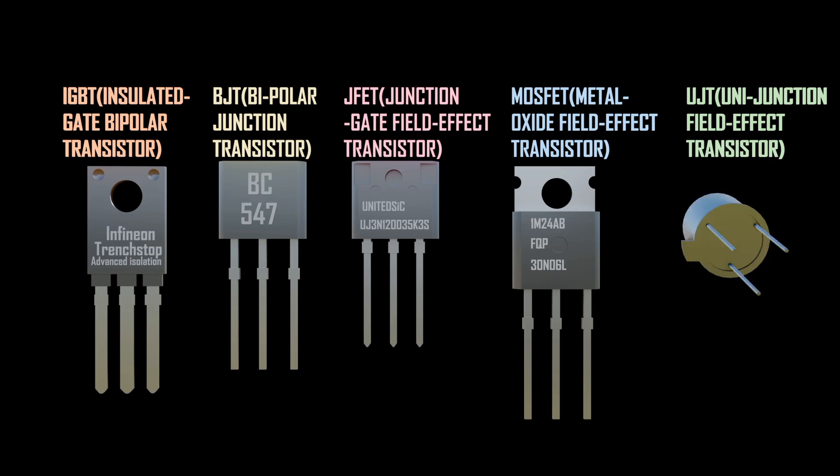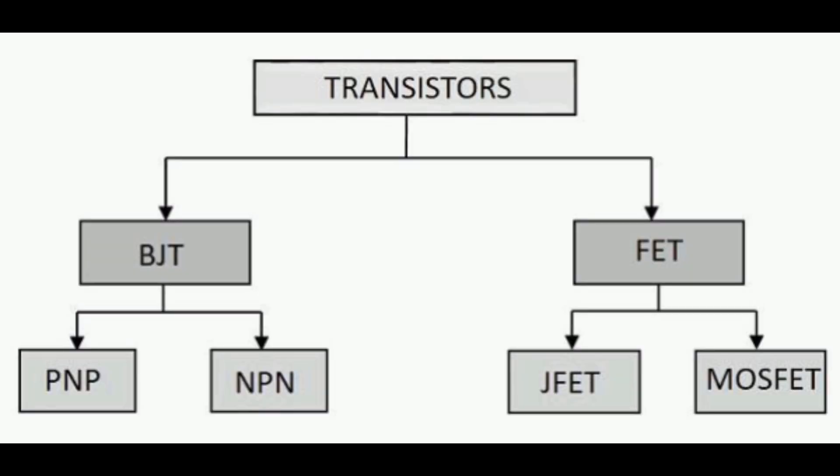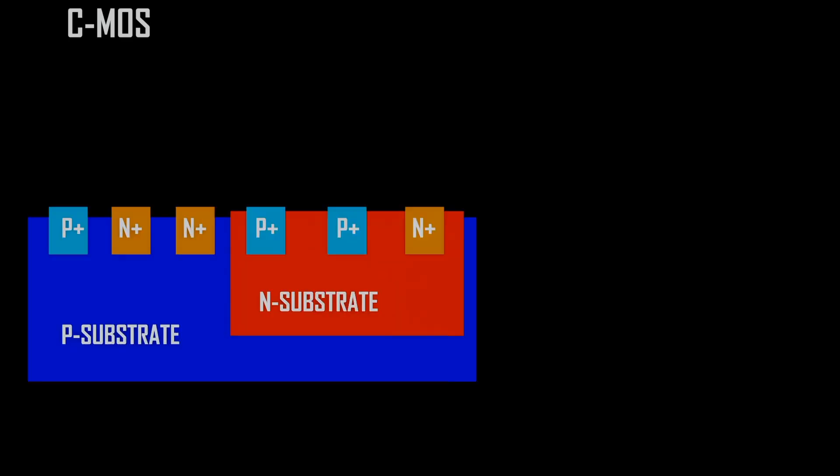Bipolar junction transistor. Field effect transistor, which falls under two categories: Junction Field Effect Transistor (JFET) and Metal Oxide Semiconductor Field Effect Transistor (MOSFET). JFETs are further categorized under P-channel and N-channel. MOSFETs are categorized under depletion and enhancement mode. MOSFETs are further combined to form Complementary MOSFET, and also UJT.